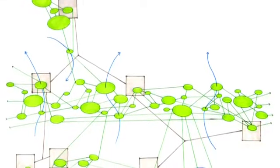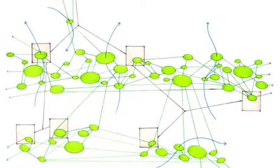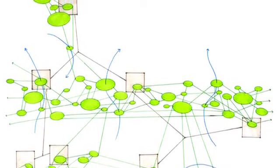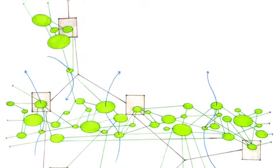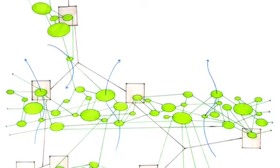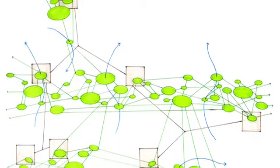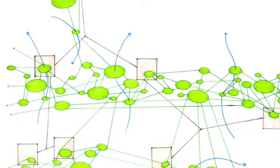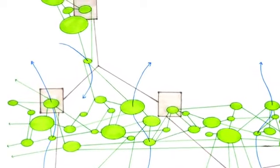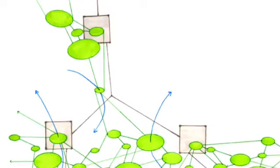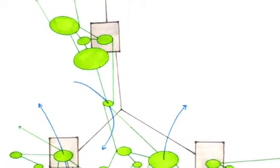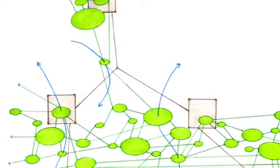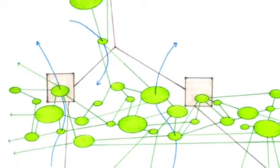Have we not, however, reverted to a simple dualism by contrasting maps to tracings as good and bad sides? Is it not the essence of the map to be traceable? Does not a map contain phenomena of redundancy that are already like tracings of its own? But the opposite is also true. It is a question of method. The tracing should always be put back on the map.